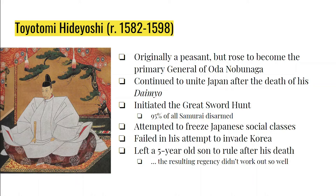Following the Great Sword Hunt, Hideyoshi attempted to freeze social classes, making it so that you must marry within your class and live within your class. He prohibited peasants from quitting their work for their Daimyo and prohibited samurai from quitting the service of their Daimyo. Once the Great Sword Hunt was done and social classes were frozen, he invaded Korea in 1592, but didn't achieve victory, and his failure really damaged his reputation.